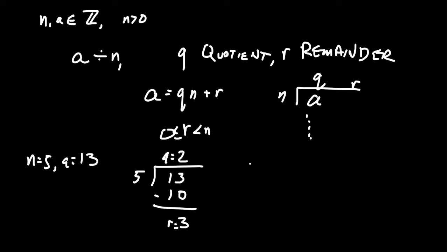A quick example: take N equals 5 and A equals 13. We take 13 divided by 5 — the biggest multiple of 5 that goes into 13 is 2 times 5 equals 10. Then 13 minus 10 gives 3, your remainder. Your quotient was 2. So 13 equals 2 times 5 plus 3. Modular arithmetic is not interested in the quotient — it's interested in the remainder.